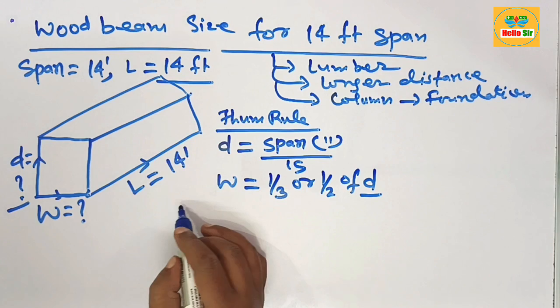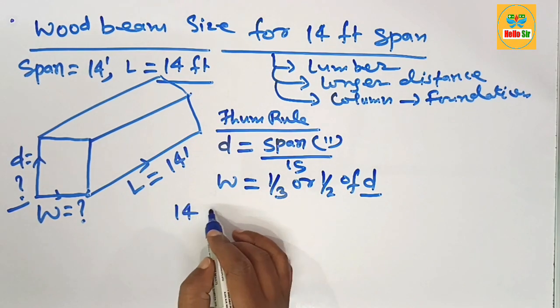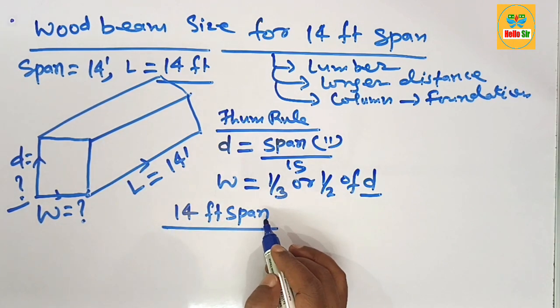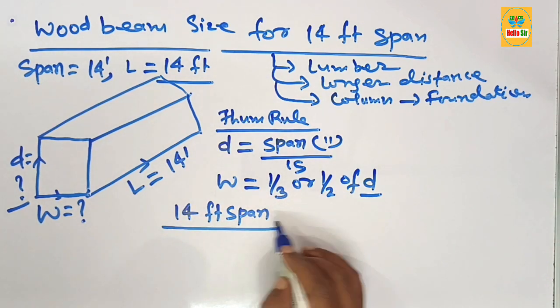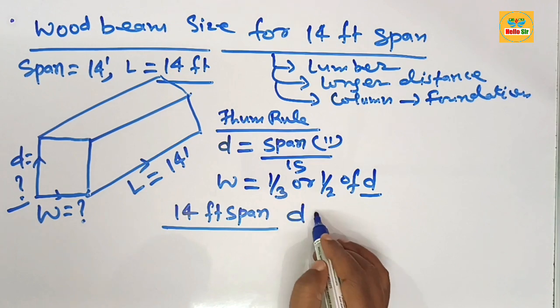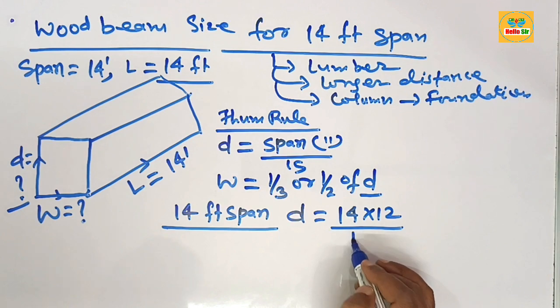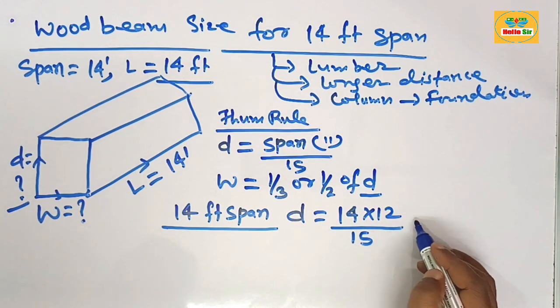Here you have the span length of 14 feet. What are the depth and width section of the 14-foot wood beam? The depth is equal to 14 multiplied by 12 and divided by 15. This will come